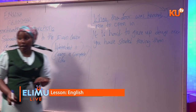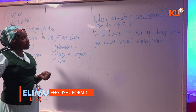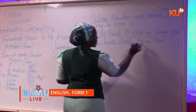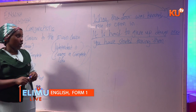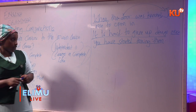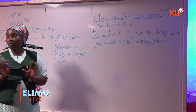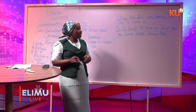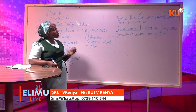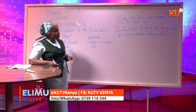In this sentence, the clause conveying a complete thought is 'it is hard to give up drugs' — that is the independent or main clause. If you stand up and tell students 'it is hard to give up drugs,' they understand. But 'once you've started taking them' is the dependent clause — it depends on the main clause to convey its meaning.